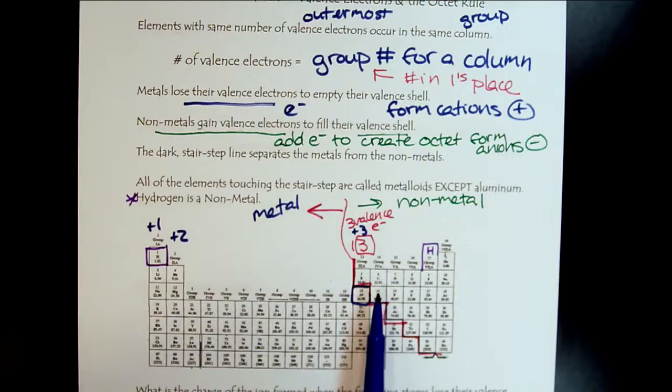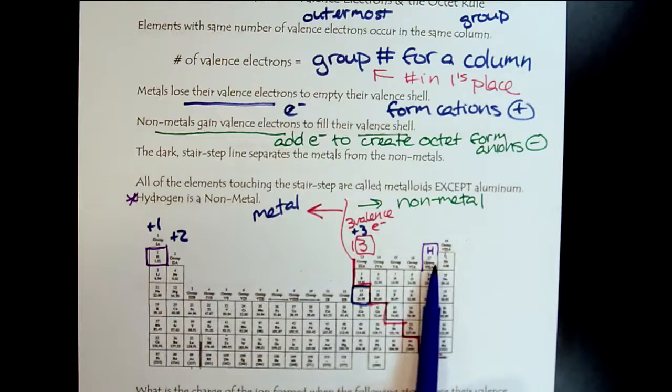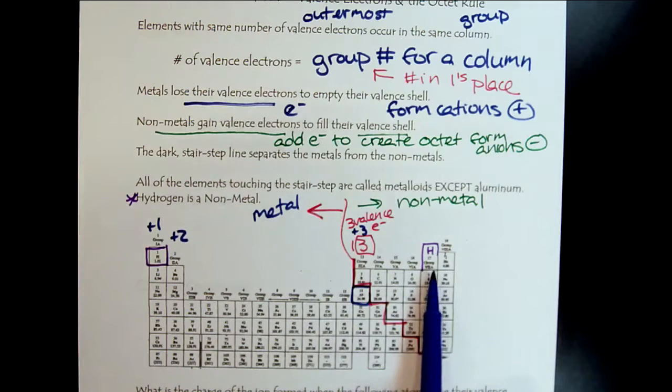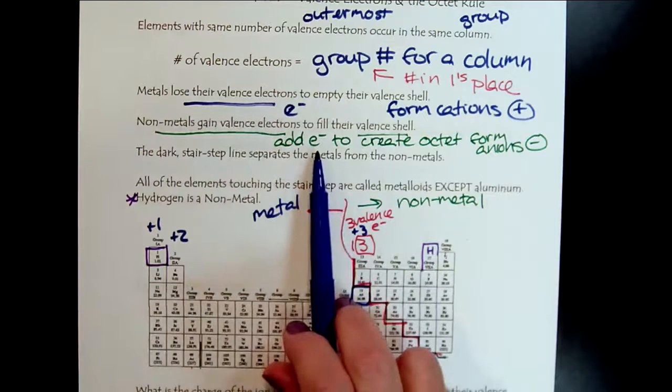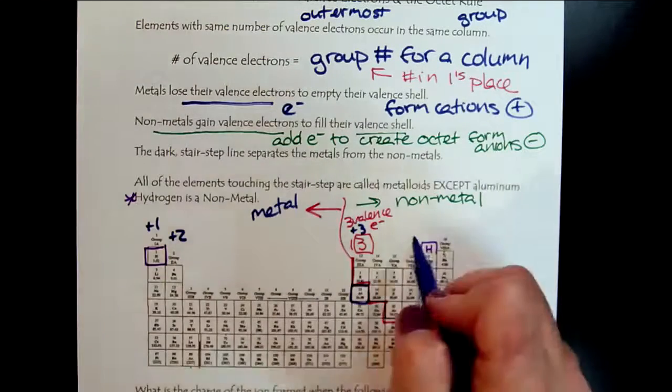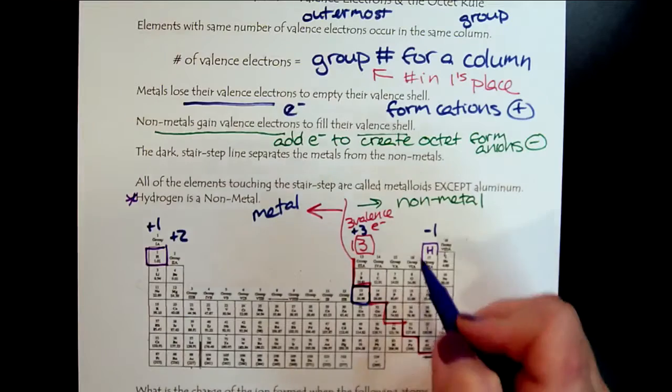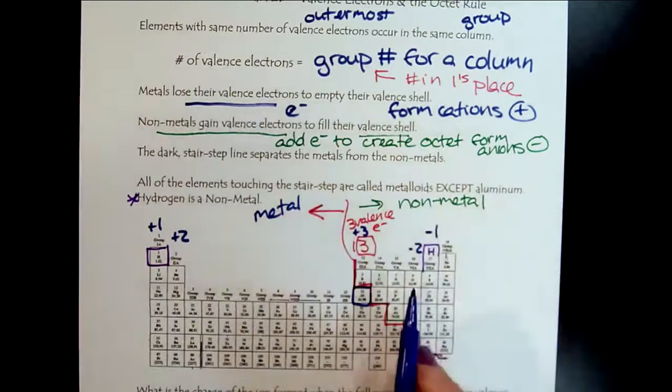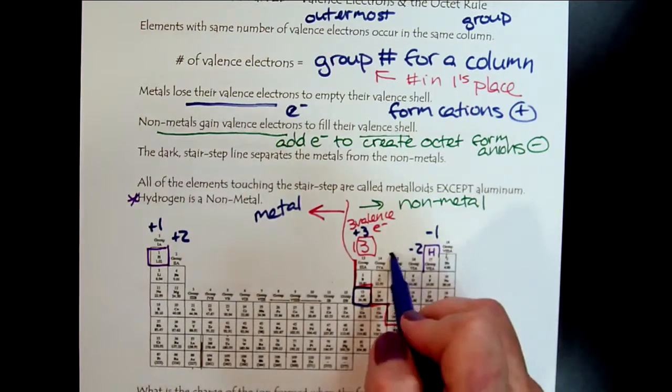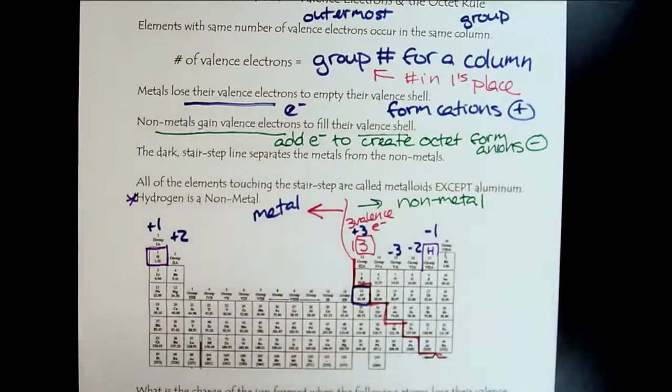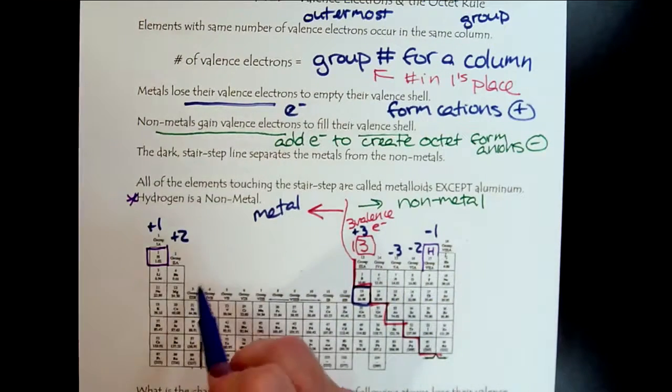Carbon, for our course, we're not going to worry about ions forming there. Let's move over here to the nonmetals. Here's group seventeen, or group seven. So there's seven valence electrons. We just need to add one. That's why it's minus one. There's our halogens. Oxygen, oxide and sulfide. And then nitride and phosphide.